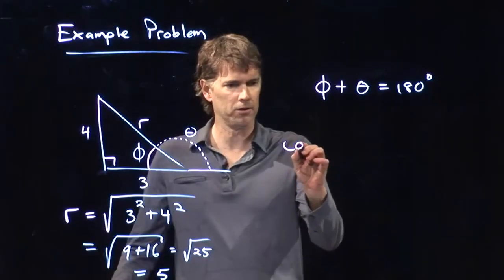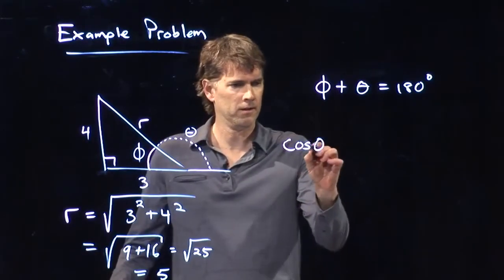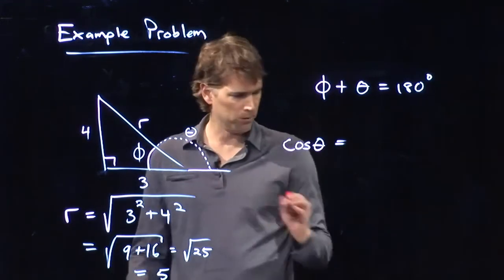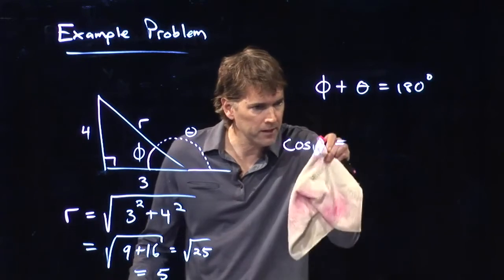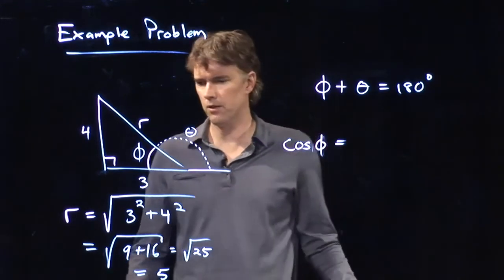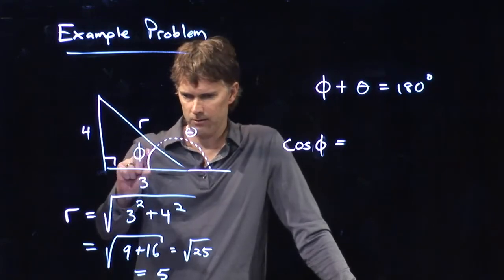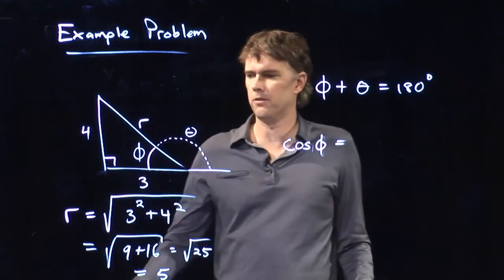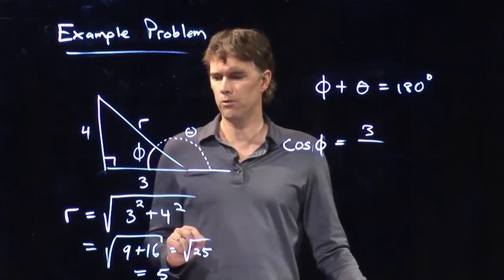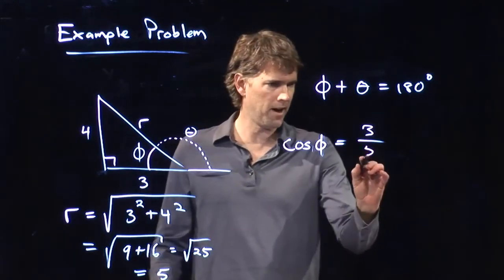I guess cosine. Cosine. Excellent choice. Cosine of theta. In this case, cosine of theta is what? Well, we're doing phi. Cosine of phi is what? Well, phi is this little angle right here. So cosine is going to be adjacent, which is 3, divided by the hypotenuse R, which we said was 5.